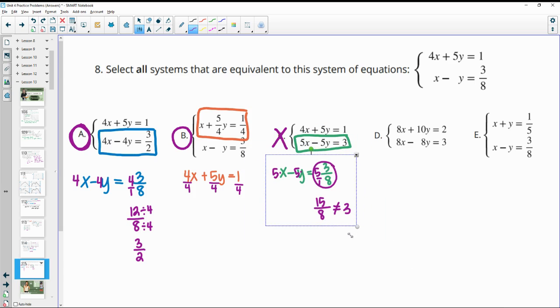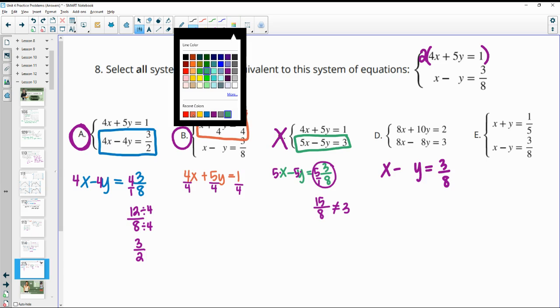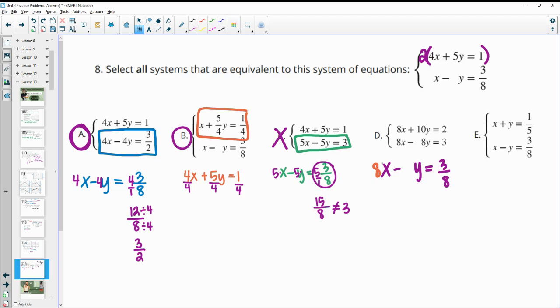Then D. Now D, they changed both equations, and we can see on this top one that they just multiplied everything by 2. So they just did times by 2 to everything, got 8x, 10y, and 2. So that one is good. Then this bottom equation, they had x minus y equals 3/8. What did they do to it? So in this one, they multiplied by 8. So times by 8, times by 8, times by 8. So we get the 8x, the 8y, and then these 8s will cancel, and we just get 3. So this one is good. They just multiplied that bottom equation by 8 and the top equation by 2.